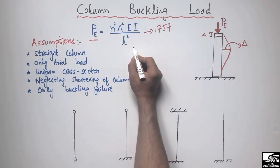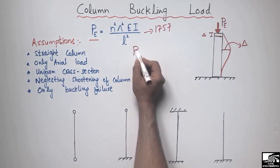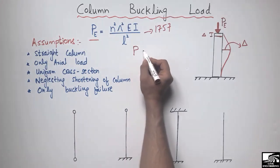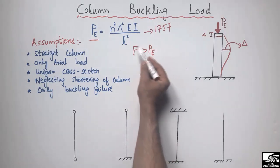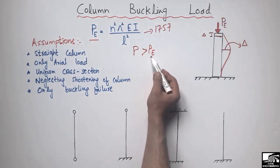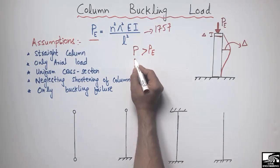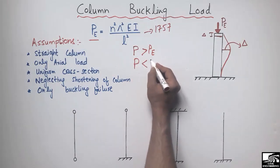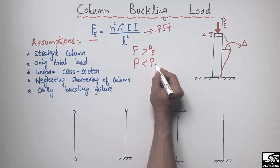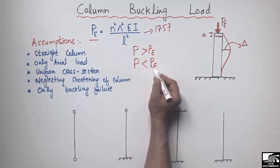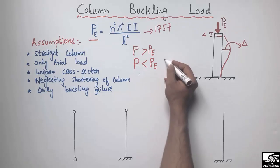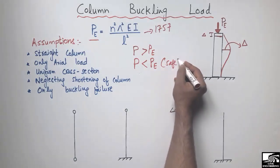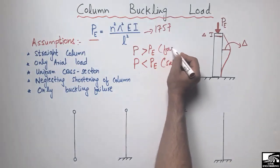After fulfilling these assumptions, we use the Euler buckling formula for calculating our critical load. If the applied load P on the column is greater than the Euler buckling load, the column will fail in buckling. The applied load P should always be less than the critical load for the column to be safe.